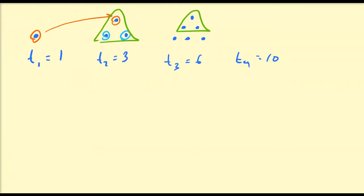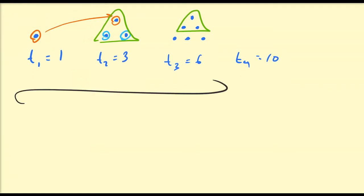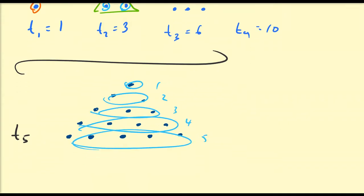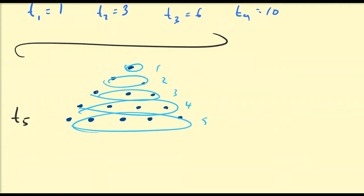Let's try and generate a formula for this type of number by considering t5. t5 corresponds to the picture with 5 base points at the bottom, then 4 above that, then 3, then 2, then 1. So we have 1 on the first row, 2 on the second, 3 on the third, 4 on the fourth, and 5 on the fifth. So t5 is equal to 1 plus 2 plus 3 plus 4 plus 5.